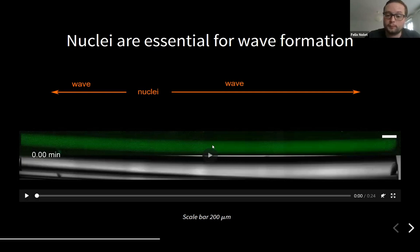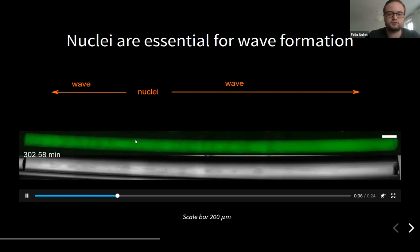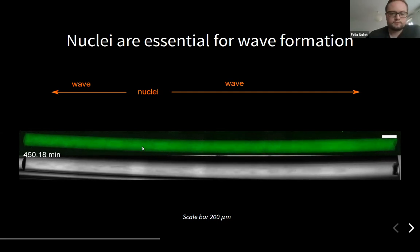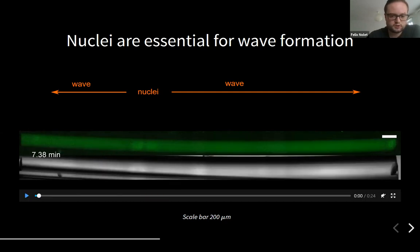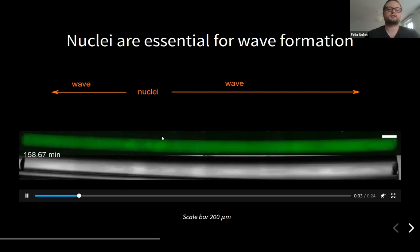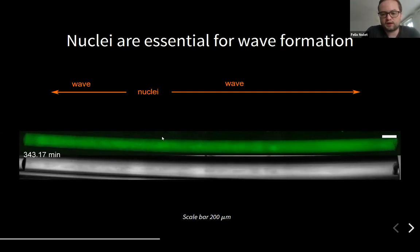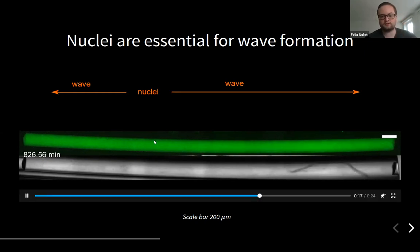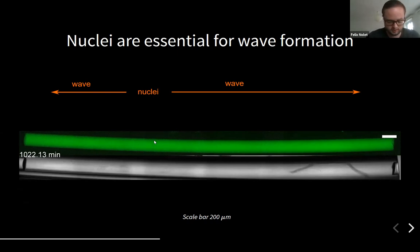But what if we only add a little bit of nuclear material such that only a few nuclei will form? That's what is visible in this video. We added only a bit such that two nuclei appear. Two nuclei form and they start to send out waves to the left and to the right. So in conclusion, if we have many nuclei we see waves. No nuclei means no waves, and only one or two, they are exactly the ones that spread the wave. We conclude nuclei are in fact essential for the formation of these waves.